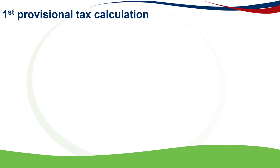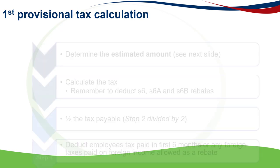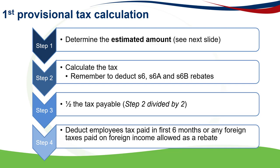The following steps are used in calculating the first provisional tax payment. The first step is to determine the estimated taxable amount, which we will discuss in the next slide. The second step is to calculate the normal tax on the estimated taxable income from step one — remember to deduct section 6, section 6A, as well as section 6B rebates. The third step is to take half of the tax payable, that is step two divided by two. And lastly, to deduct the employee's tax paid in the first six months, or any foreign taxes paid in the first six months that are allowed as a rebate on foreign income, to arrive at the final first provisional tax payment.